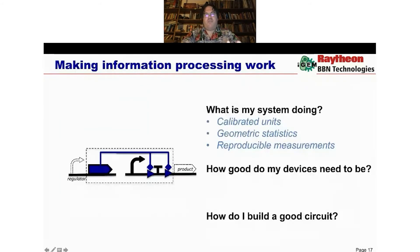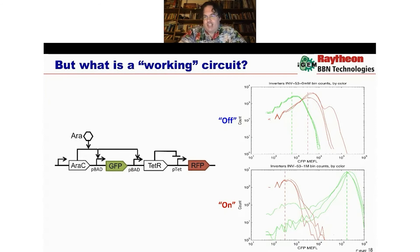So, we've got the first major chunk, and this is the biggest piece, because this is what gives us the ability to actually even ask the right questions in information processing. You have calibrated units, geometric statistics, good process controls that let us have reproducible measurements. I want to turn to the next piece now. How good do the devices I'm building need to be? And for this, I want to ask a very uncomfortable question.